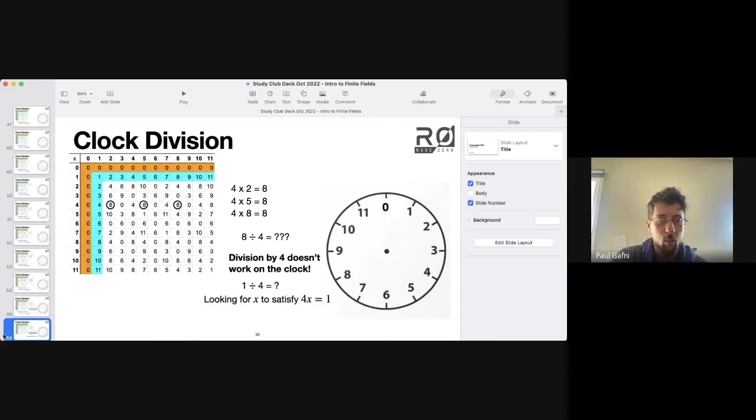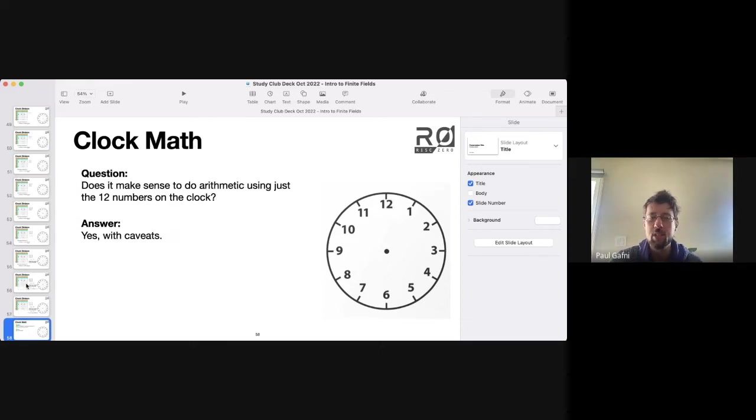And on the other hand, 1 divided by 4 doesn't have any answers at all. So we've now seen some caveats. Does it make sense to do arithmetic on this clock? The answer is yes. You can do addition, subtraction, and multiplication. But division doesn't really work here.